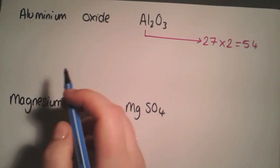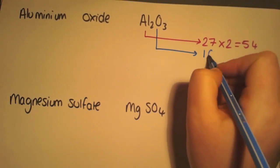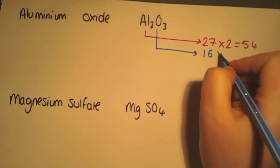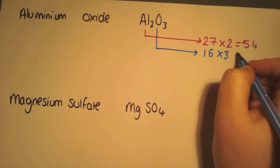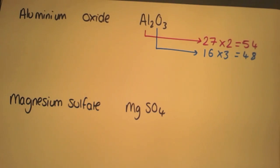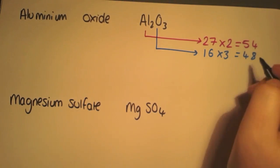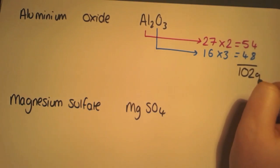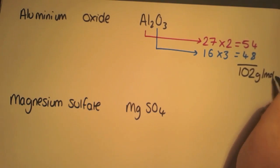Moving on to look at oxygen. Oxygen has a gram formula mass of 16, and as there are three of them, we multiply it by 3 to give us 48. This gives a total of 102 grams per mole.